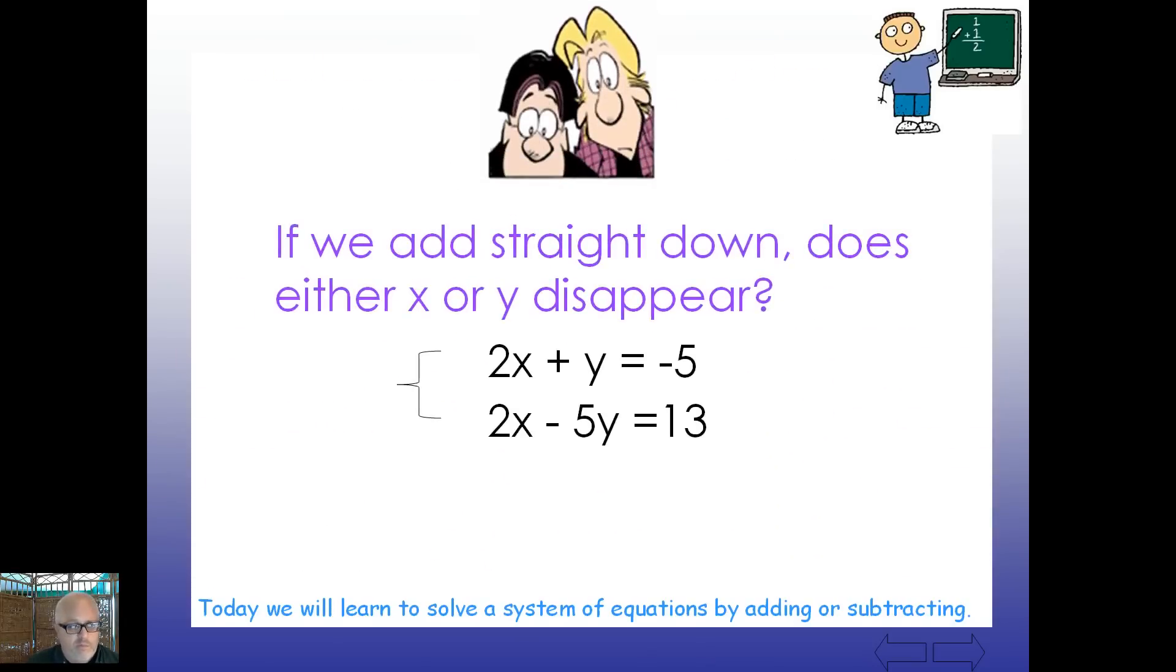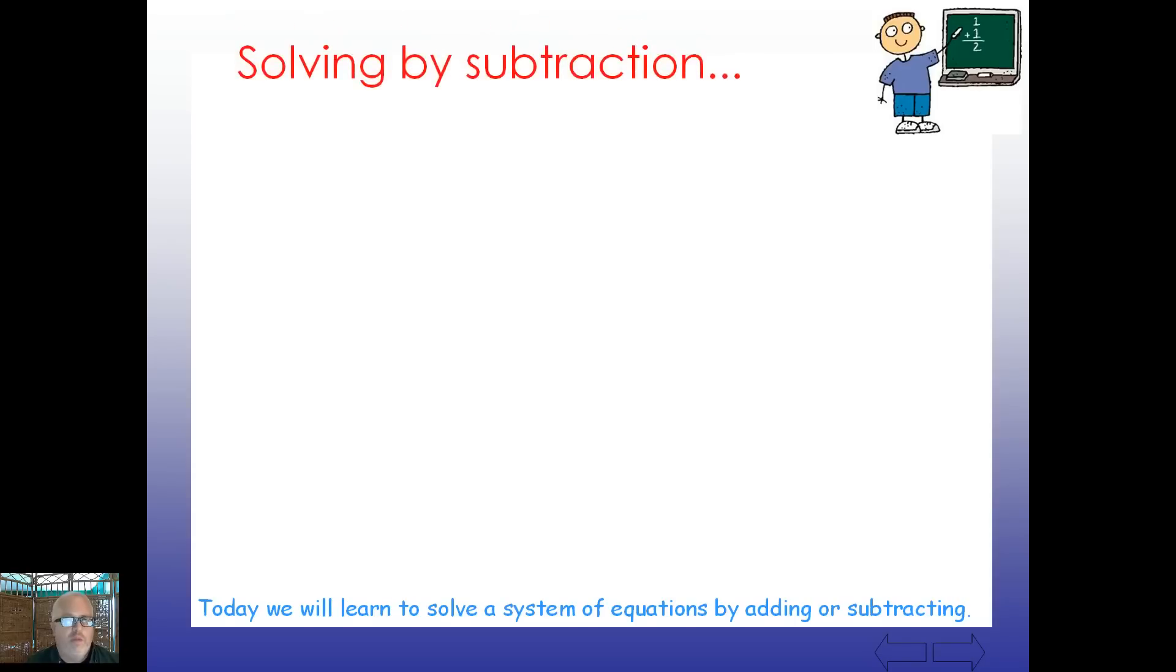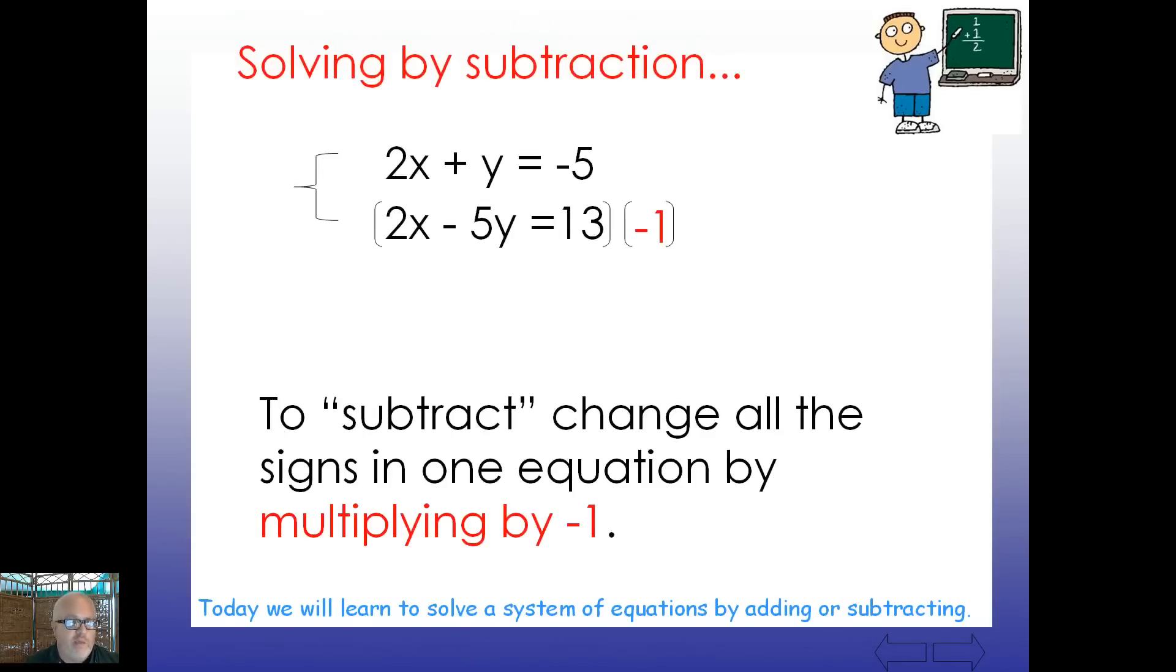Now, let's look at this one. If we were to add straight down, what's 2X? Notice they're all lined up. 2X plus 2X. Well, that's 4X. Positive 1 and negative 5. Well, that's negative 4. So we're not going to eliminate anything doing this, are we? If we add. Well, what can we do then? Well, there you go. If adding doesn't help, subtract. Solving by subtraction. And, of course, it's the same idea. Take this. And let's see what happens. To subtract, change all the signs in one equation by multiplying by negative 1.